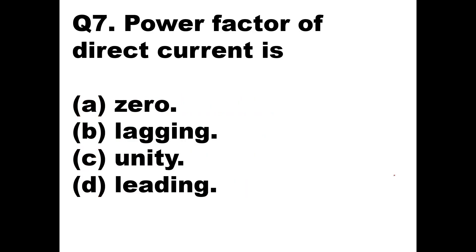Question 7: Power factor of direct current — ? Power factor gives the cosine of the angle between voltage and current in an AC circuit. In direct current, there is no angle between voltage and current — the angle is 0. So power factor = cos 0 = 1. In case of direct current, the power factor is unity. Option C is the right answer.